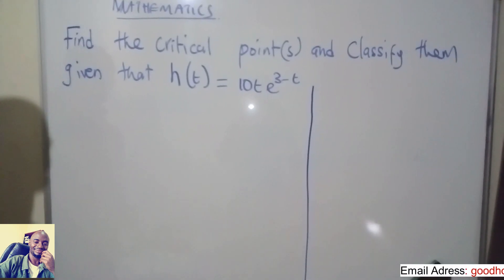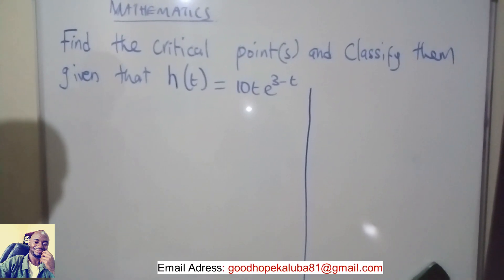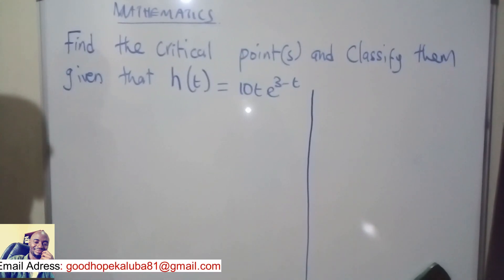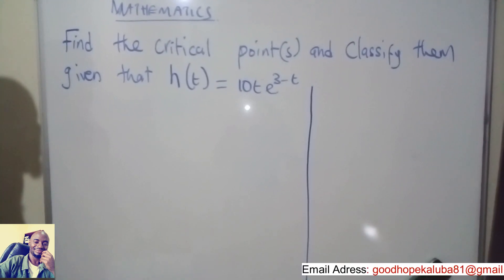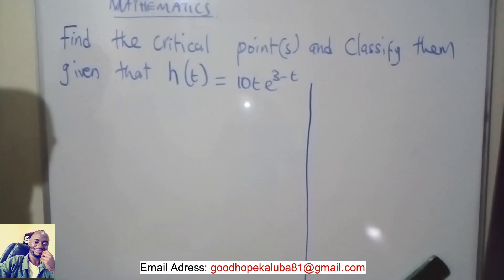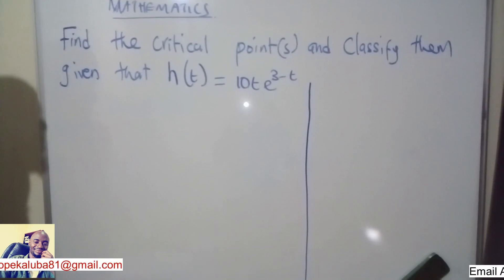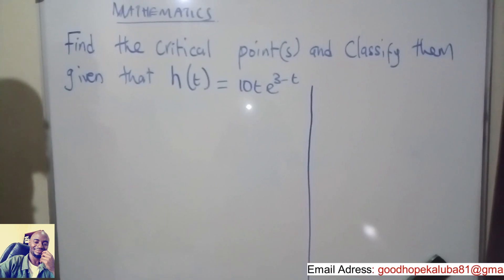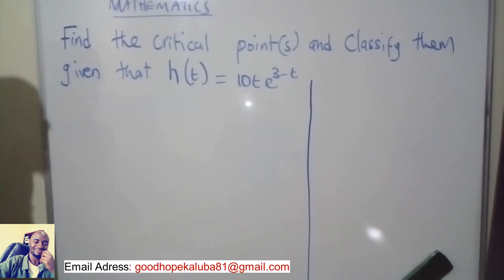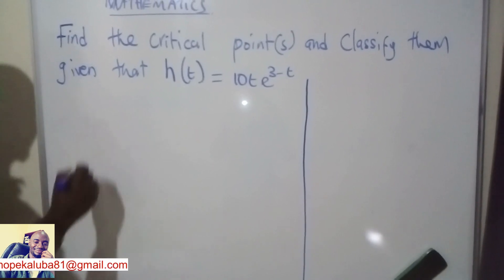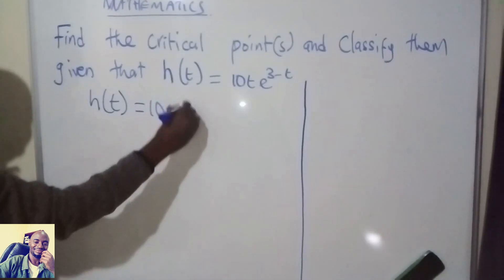Today we want to see how we can find the critical point or points and classify them, given that the function h(t) is equal to 10t·e^(3-t). To find the critical point or points, the first thing you need to do is find the derivative. At the critical points, the derivative is equal to 0.